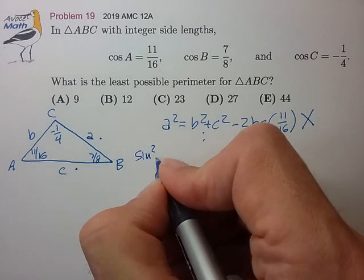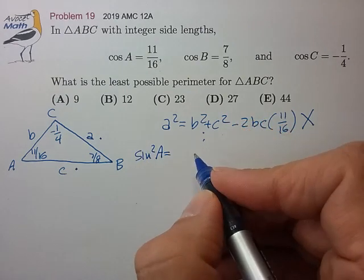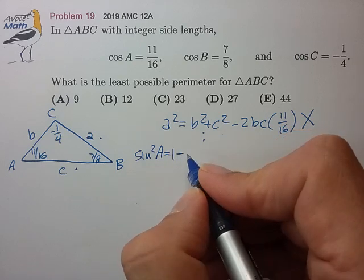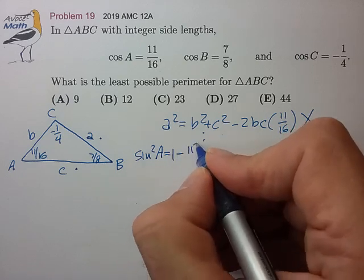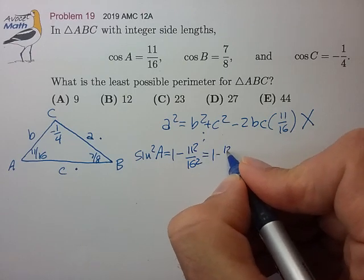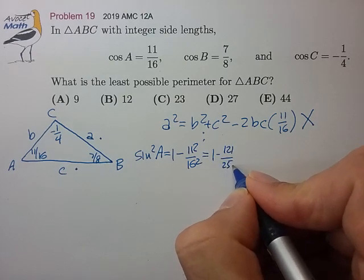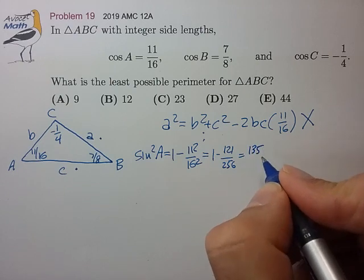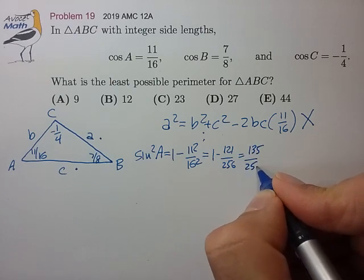We know that sine squared of A is equal to 1 minus the cosine squared of A. That's 1 minus 121/256, which equals 135/256.